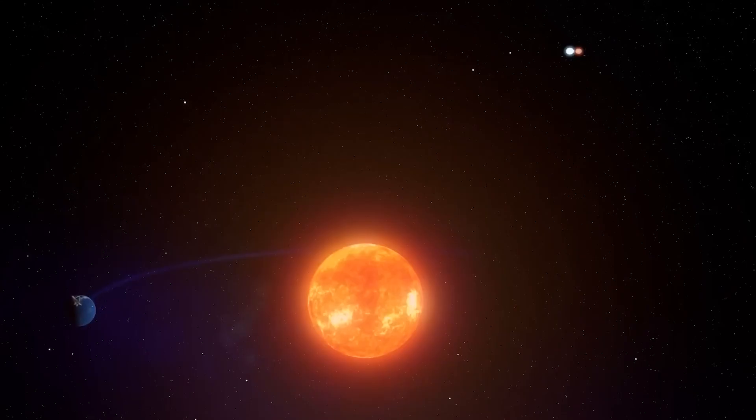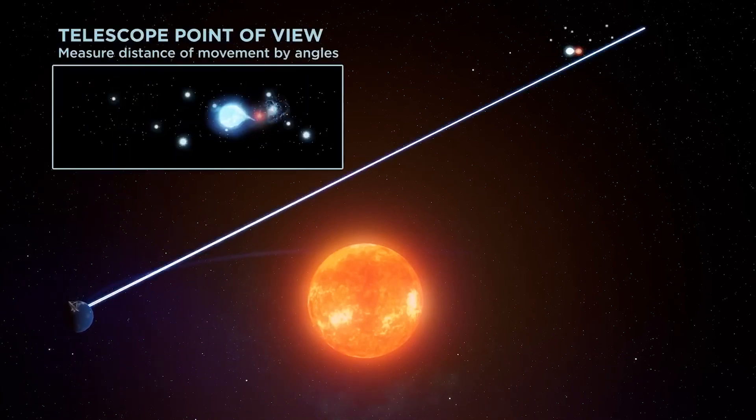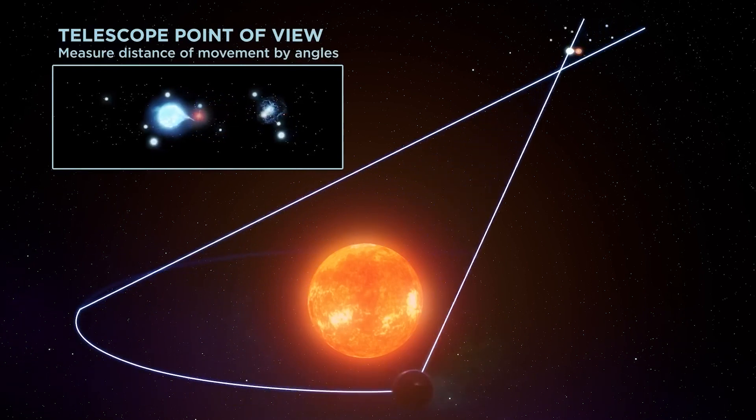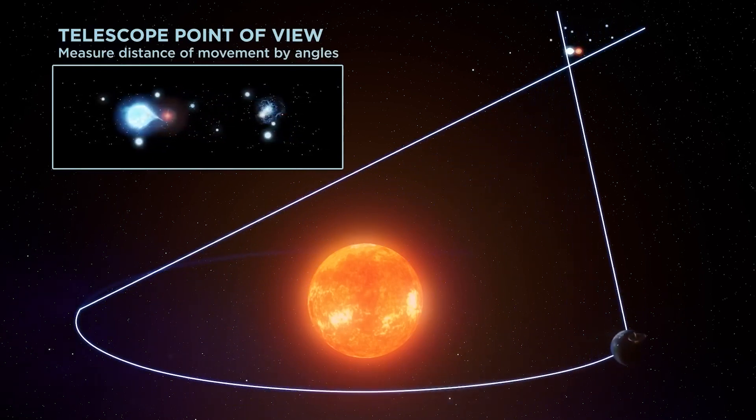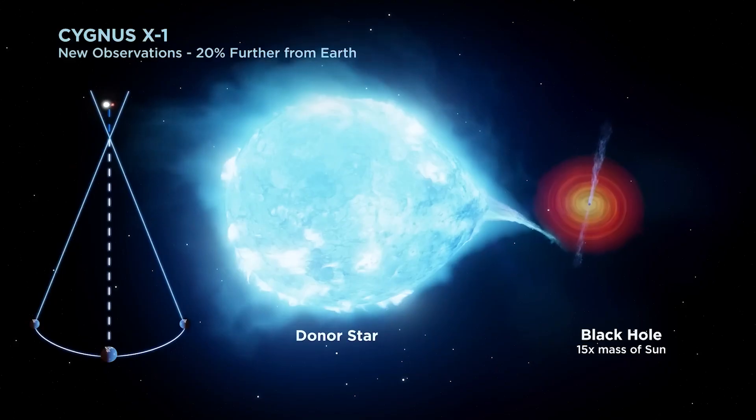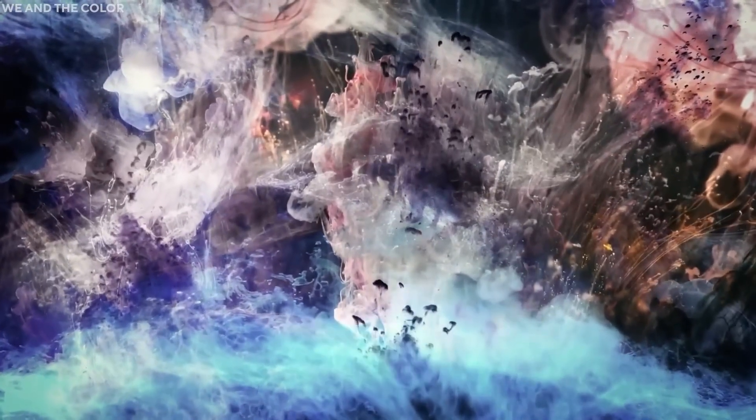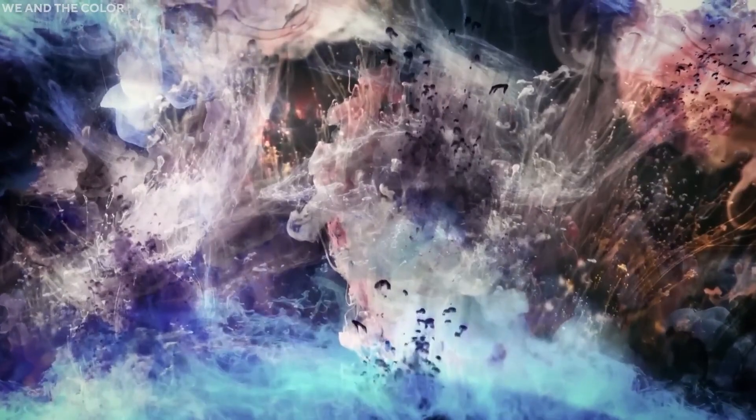However, by studying the orbit of the blue star, they were able to infer the presence of a massive invisible object, confirming it as a black hole. The discovery of Cygnus X-1 was a major milestone in the quest to understand black holes. It provided solid evidence of their existence, supported Einstein's theory of relativity, and opened up exciting new avenues for further research in astronomy.